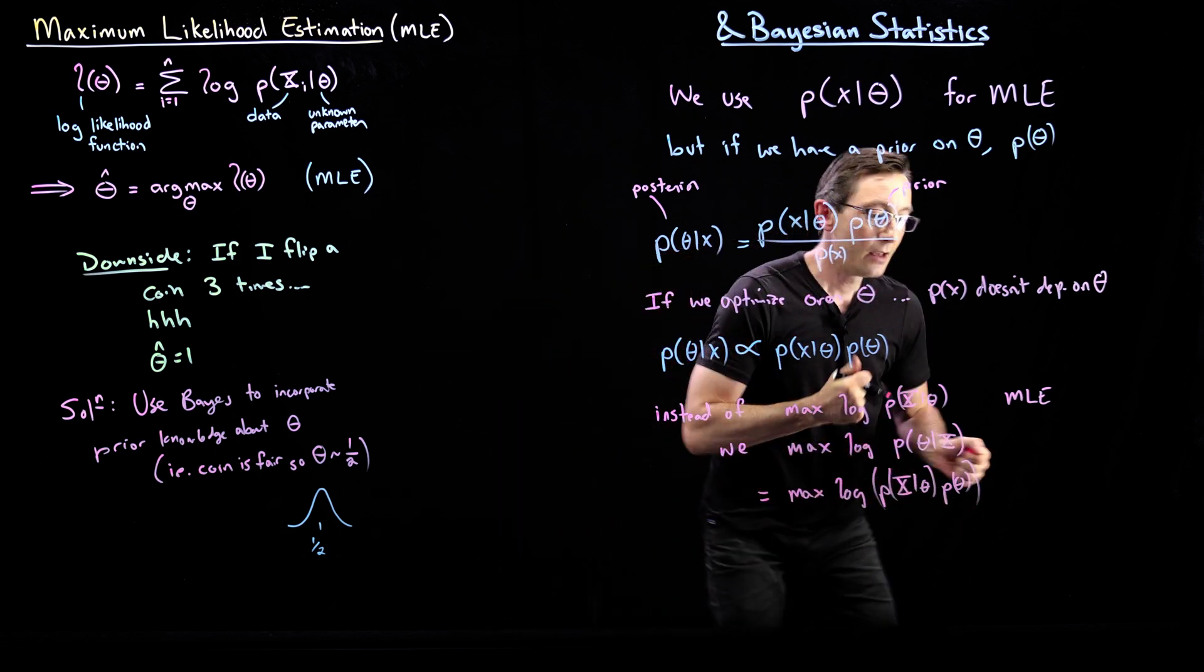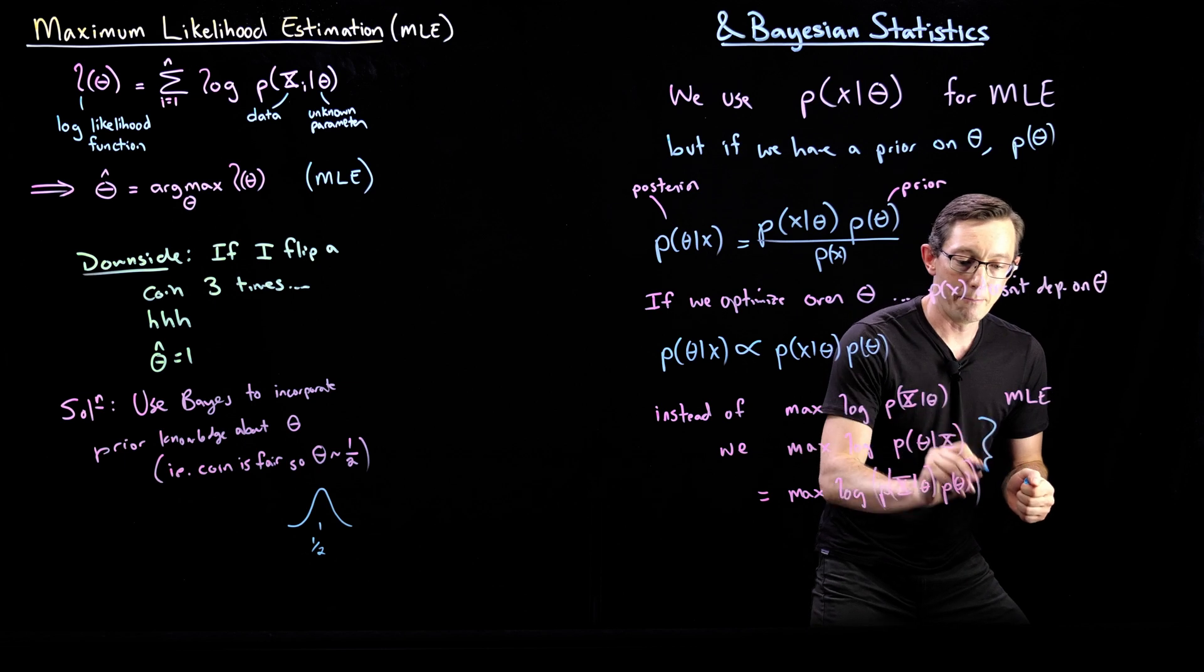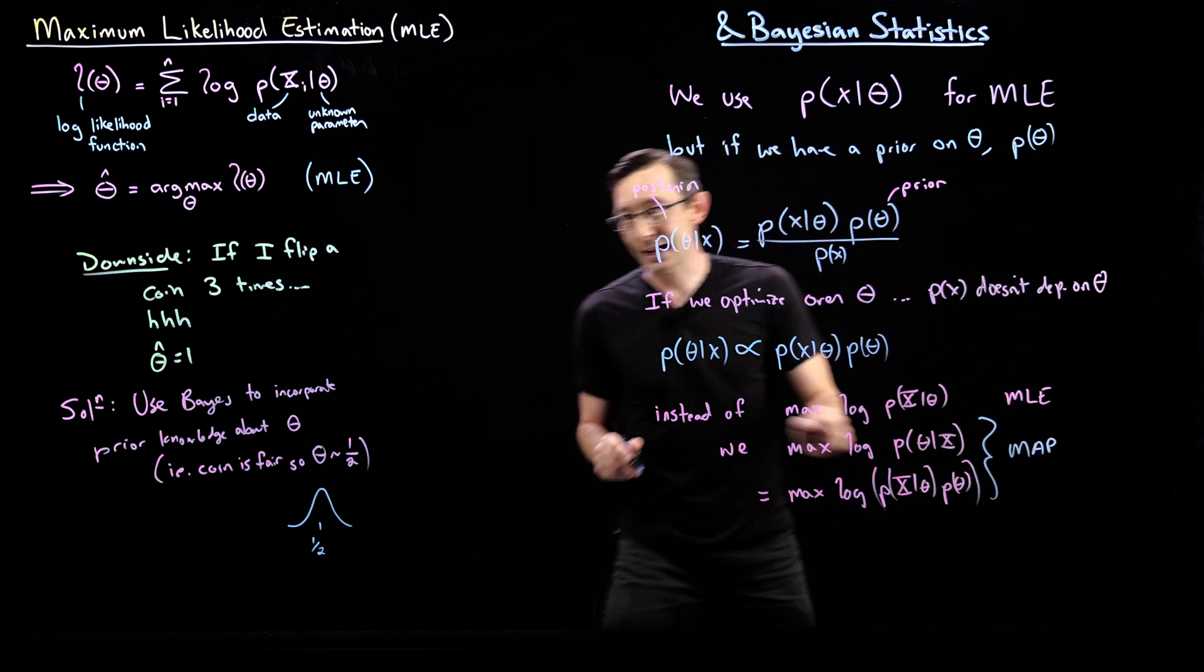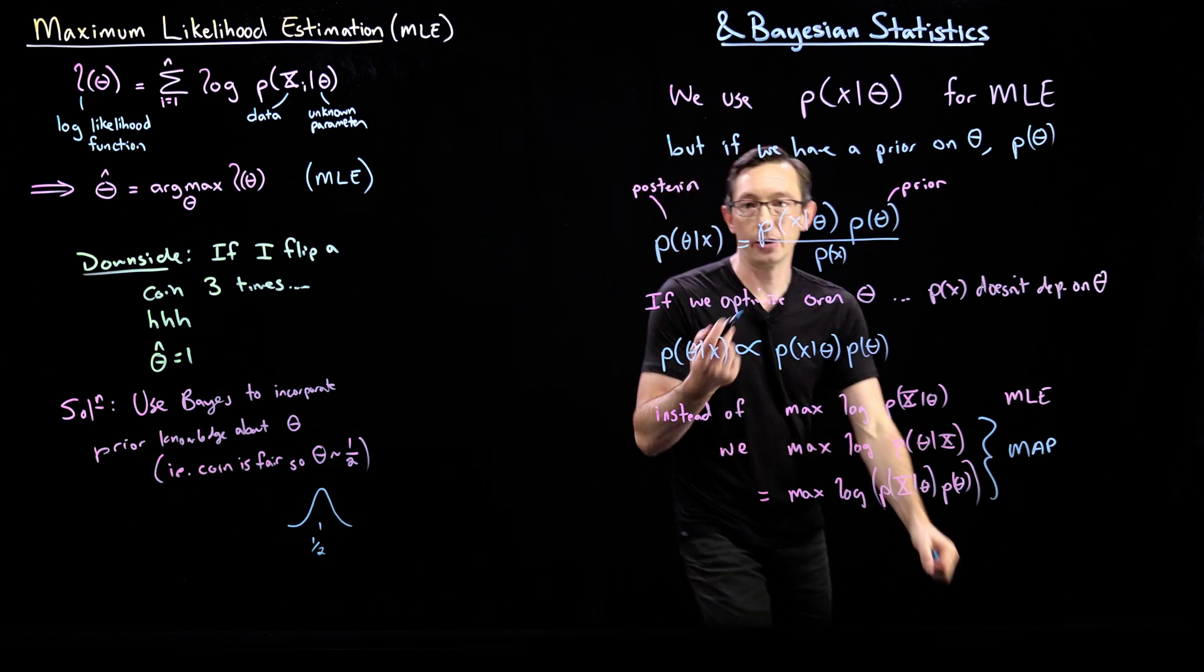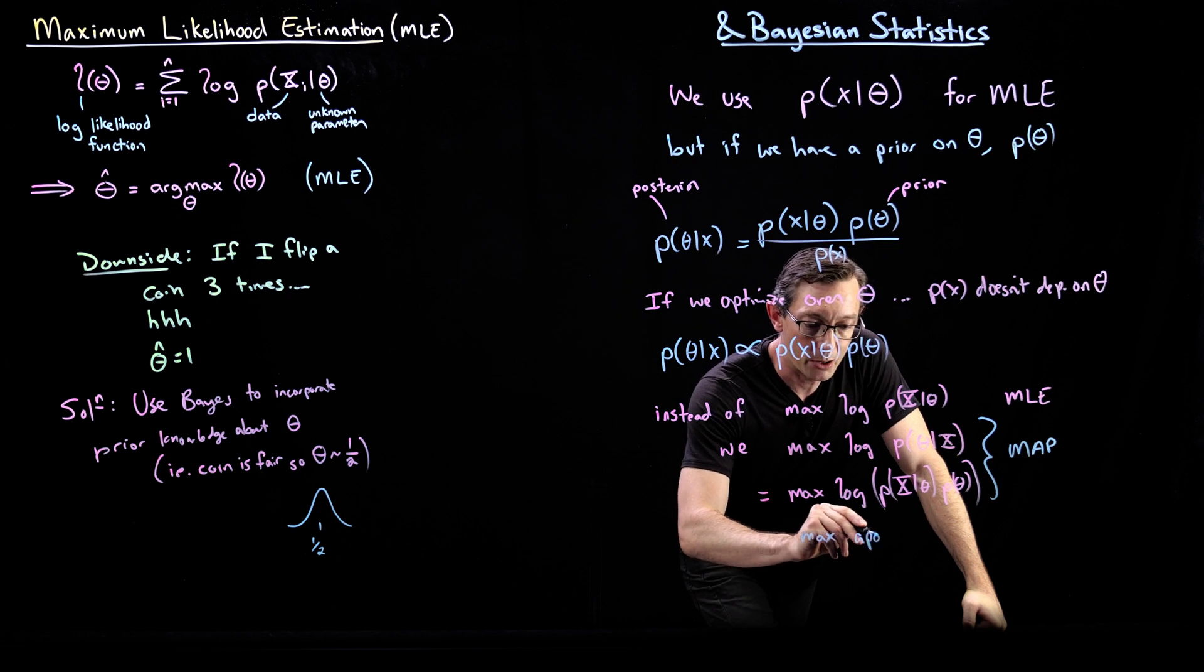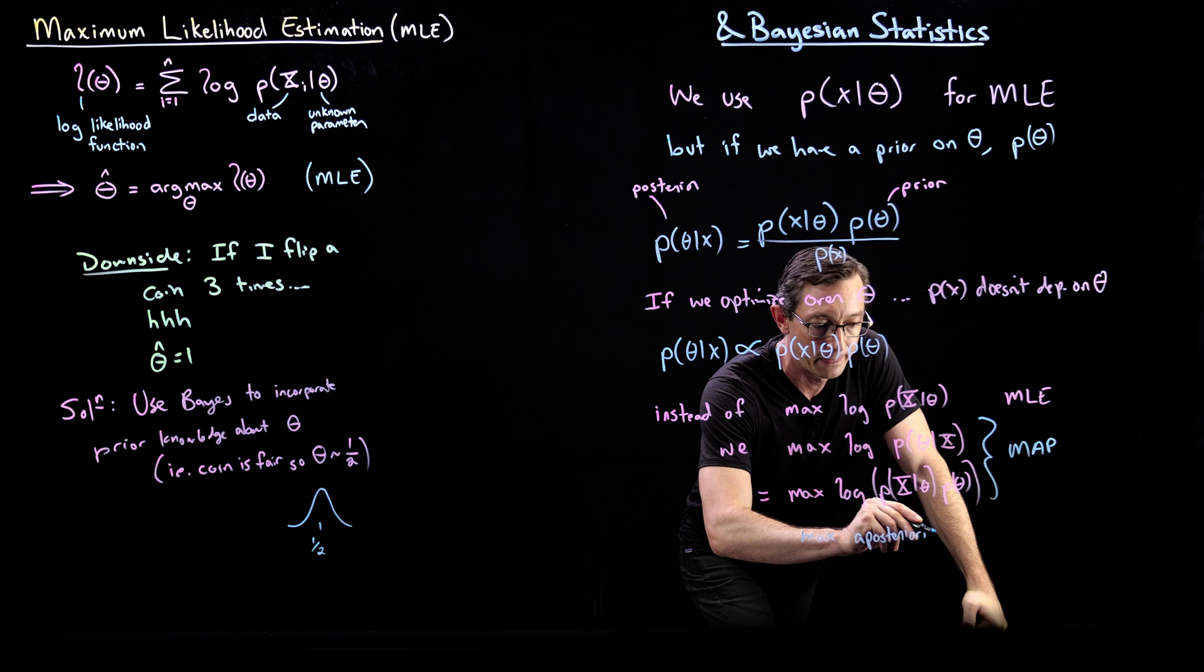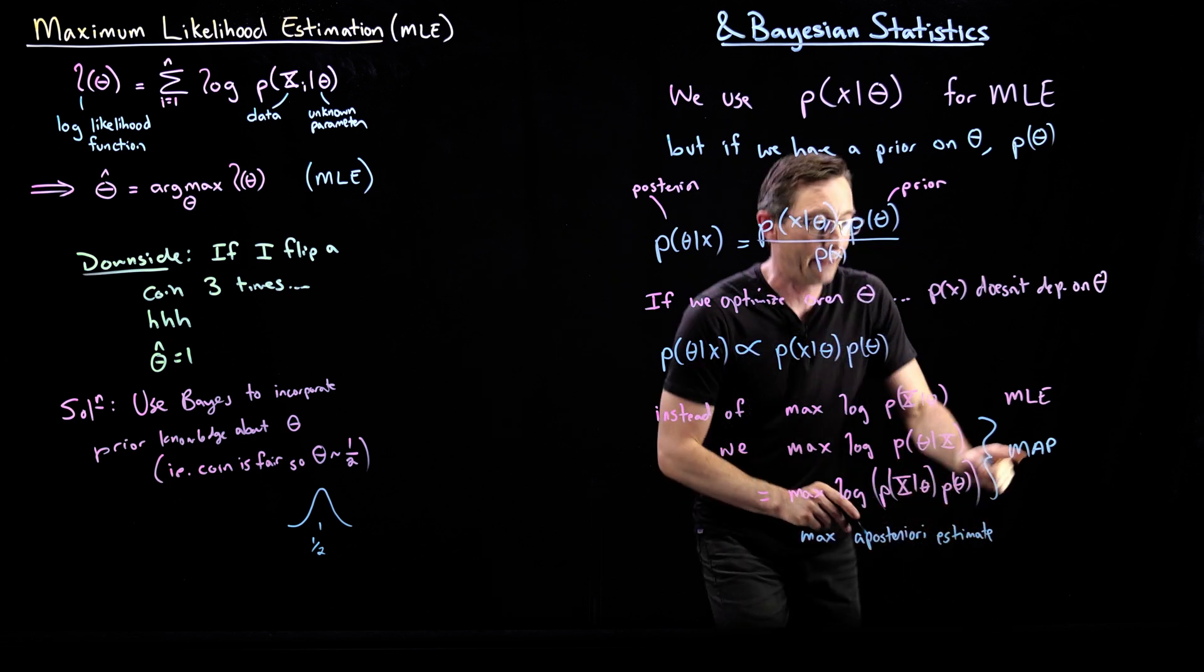These are kind of equivalent. This is called the MLE. So if this is MLE, this is MAP. The maximum a posteriori estimation. I'm going to write that out. It's the maximum a posteriori estimator. Estimate. The MAP estimate.